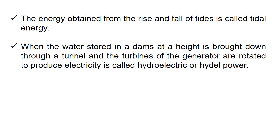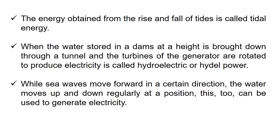When the water stored in dams at a height is brought down through a tunnel and the turbines of the generator are rotated to produce electricity, it is called hydroelectric power. While sea waves move forward in a certain direction, the water moves up and down regularly at a position. This too can be used to generate electricity.